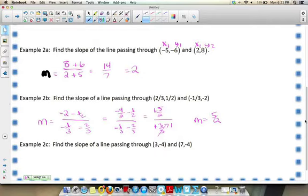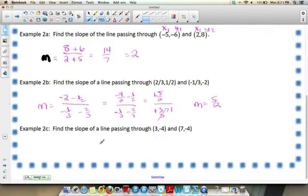My last example, I have x1, y1, x2, y2. So I have negative 4 minus minus 4, which is going to be negative 4 plus 4. And then I have 7 minus 3, so that's going to be equal to 0 over 4. This has the 0 in the numerator. That's fine. This just gives me a 0 slope. So this line is horizontal.